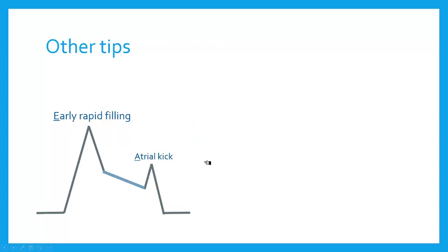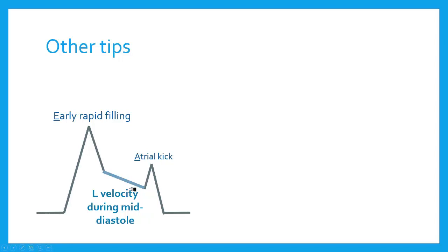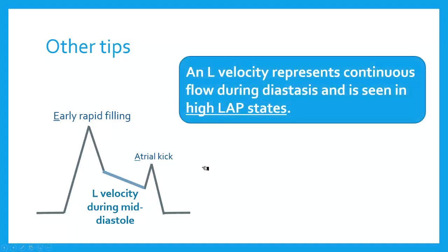Early rapid filling, atrial kick — the L-velocity. Sometimes you get this L-velocity during mid-diastole. As you'll recall, mid-diastole is also called diastasis. During diastasis, you may still have flow. When do you see that? When you have high left atrial pressure. So an L-velocity represents continuous flow during diastasis, and it's usually seen in high left atrial pressure states — though only in bradycardic states.